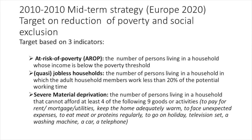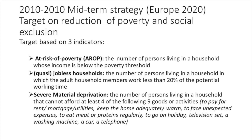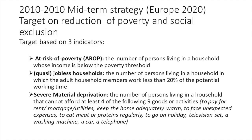The first indicator which served as a basis for this target was the at-risk of poverty rate, which I already explained — the number of persons living in a household whose income is below the poverty threshold. A second indicator was quasi-jobless households: the number of persons living in a household in which the adult household members work less than 20% of their potential working time. So this concerns an indicator which measures the attachment of the household to the labour market.